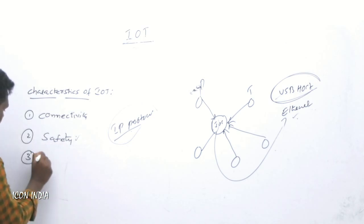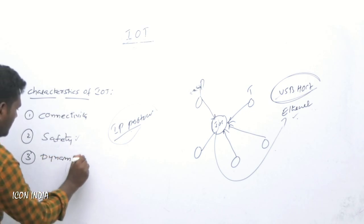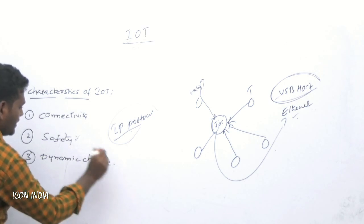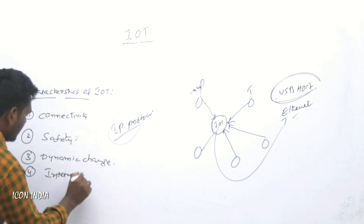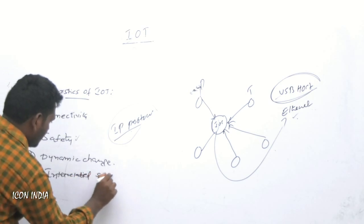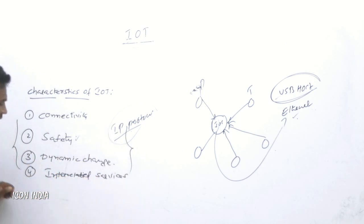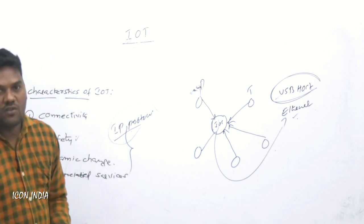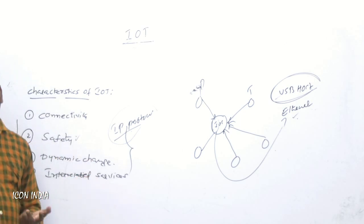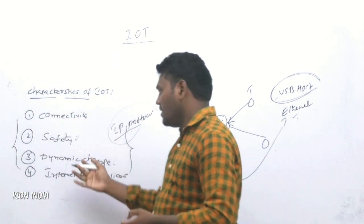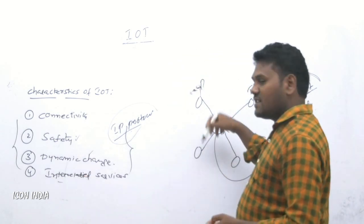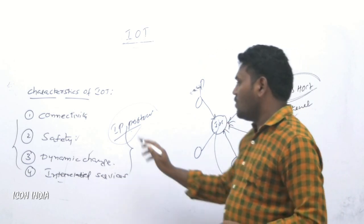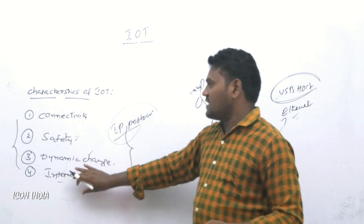The third characteristic is dynamic change, and the fourth is interrelated services. For dynamic change, suppose we go for cloud computing — we change from different client-to-server technologies and send data from client to server. Interrelated services means all devices are internally communicating within the Internet of Things. These are all the main characteristics of IoT, and that is why we prefer IoT in present technology across the entire world.